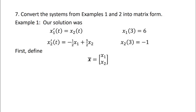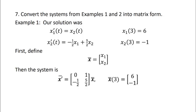So we first define the vector x bar to be x1, x2. And then our system becomes x bar prime equals the matrix 0, 1, minus a half, 5 halves times x bar. And we have our initial values as well, x bar of 3 is 6, negative 1. So this is what our solution would look like in matrix form.